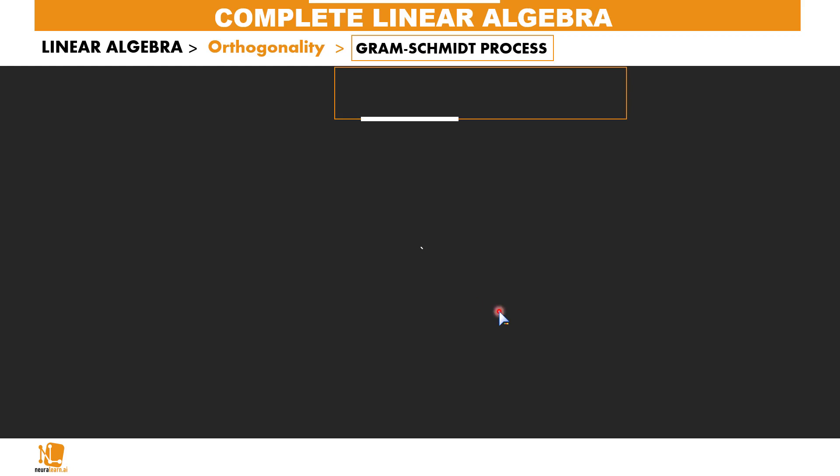It's not in every case that we have a base made of an orthogonal set of vectors. To convert a base to one with an orthogonal set of vectors, we go through a process known as Gram-Schmidt. Let's see how it works.